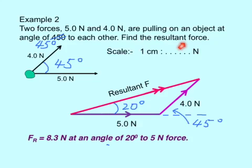Then, for the direction, make sure you measure this angle here. So, the final answer is, the resultant force equal to 8.3 newtons. This is how long that vector is. At an angle of 20 degrees to 5 newton force. That was making an angle of 20 degrees with this force here.